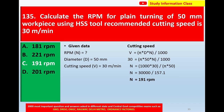Given data: diameter D = 50 mm, cutting speed = 30 meters per minute. We need to find rpm (N). Using the formula: cutting speed = π × D × N / 1000. Substituting: 30 = π × 50 × N / 1000. Solving for N: N = 1000 × 30 / (π × 50).